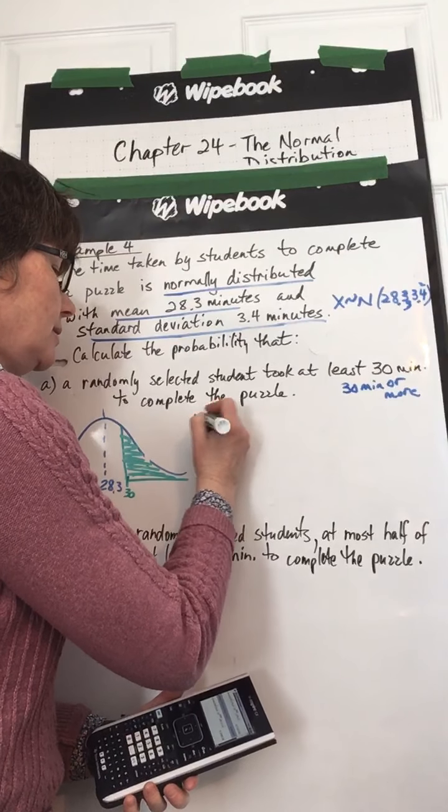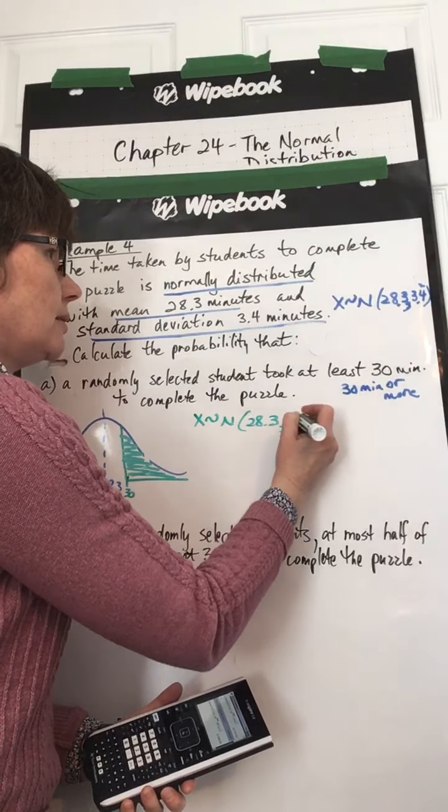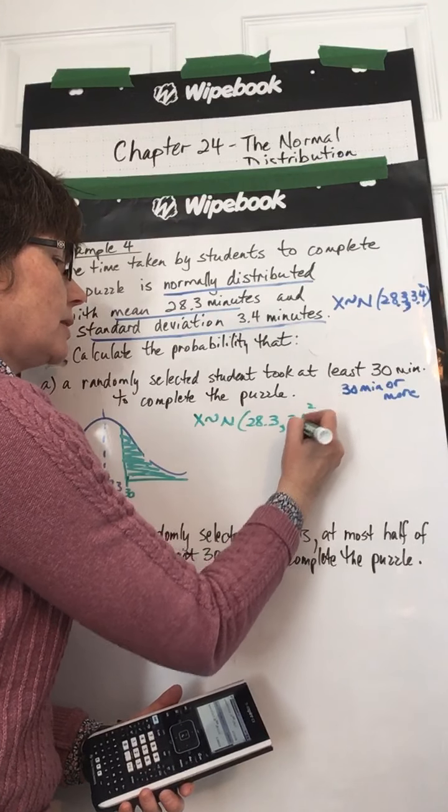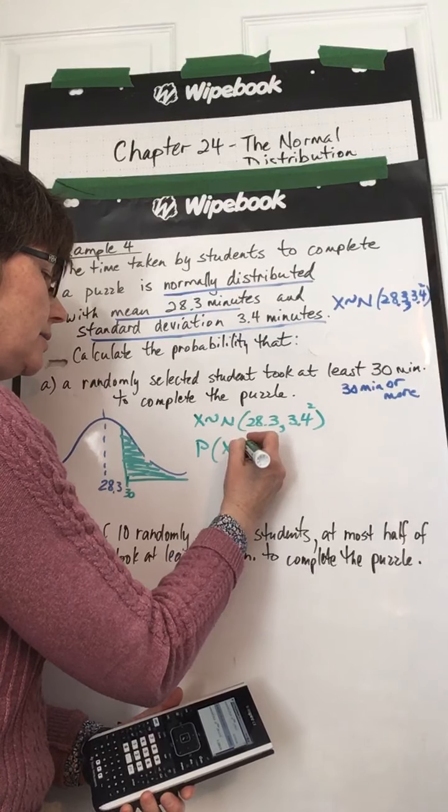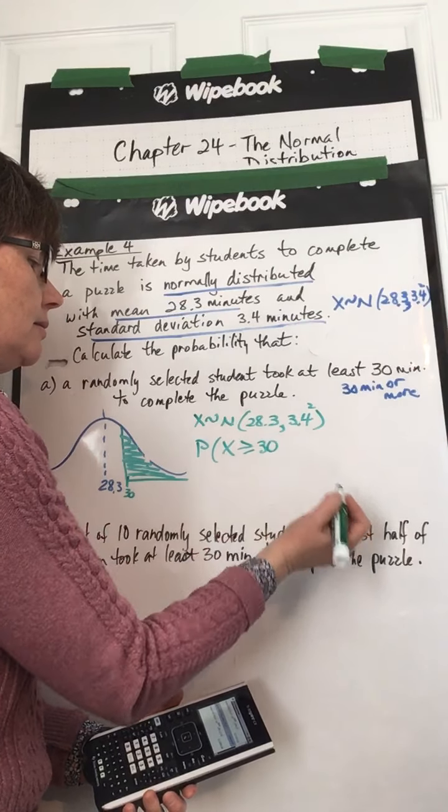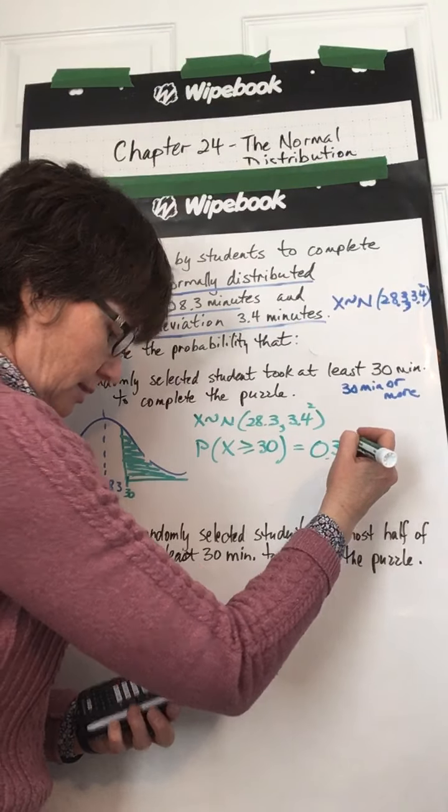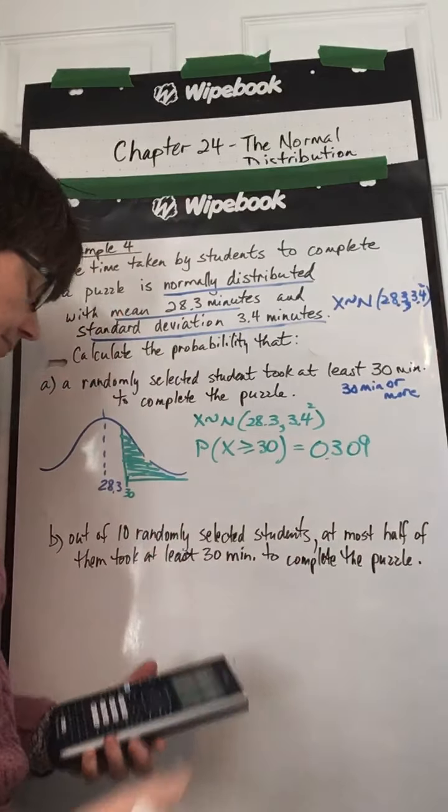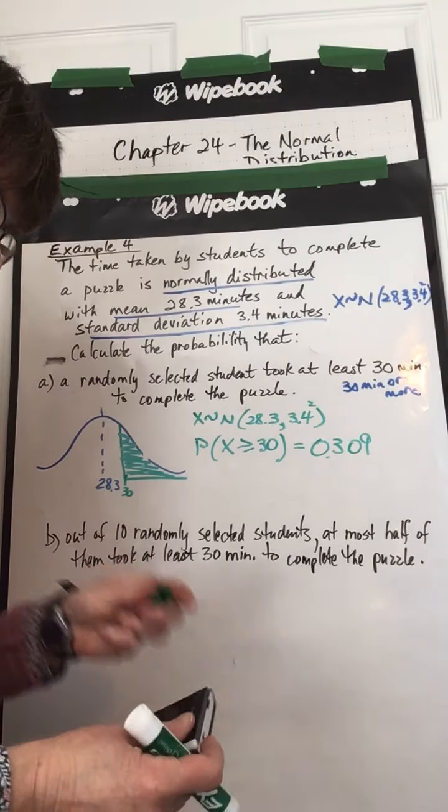So we would say x, distributed normally, 28.3, 3.4 squared. The probability that x is greater than or equal to 30 equals 0.309. And does that make sense, smaller than 50%? Yeah, that makes sense. OK.